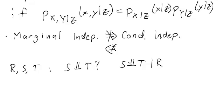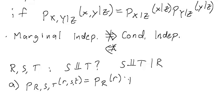That is, is S conditionally independent of T given R? So in part a, we'll have P_{R,S,T} equal to P_R times P_{S|R} times P_{T|R}.